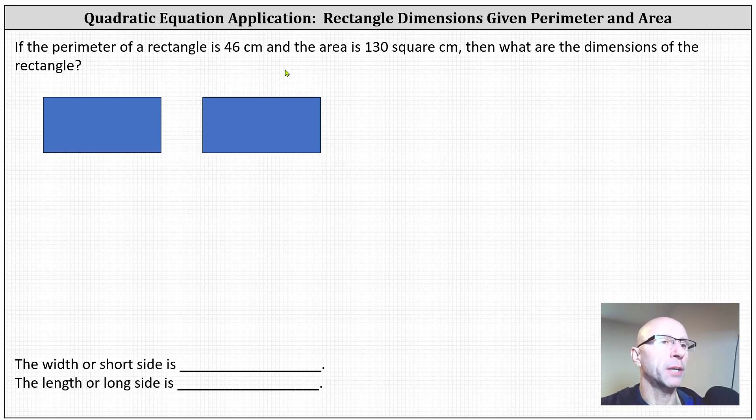If the perimeter of a rectangle is 46 centimeters and the area is 130 square centimeters, then what are the dimensions of the rectangle? Let's go ahead and model the given information.